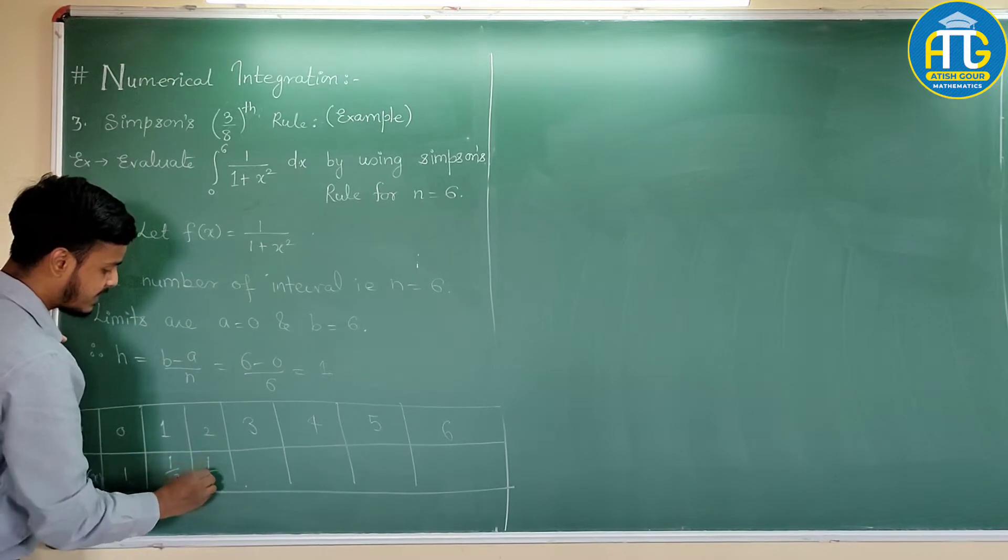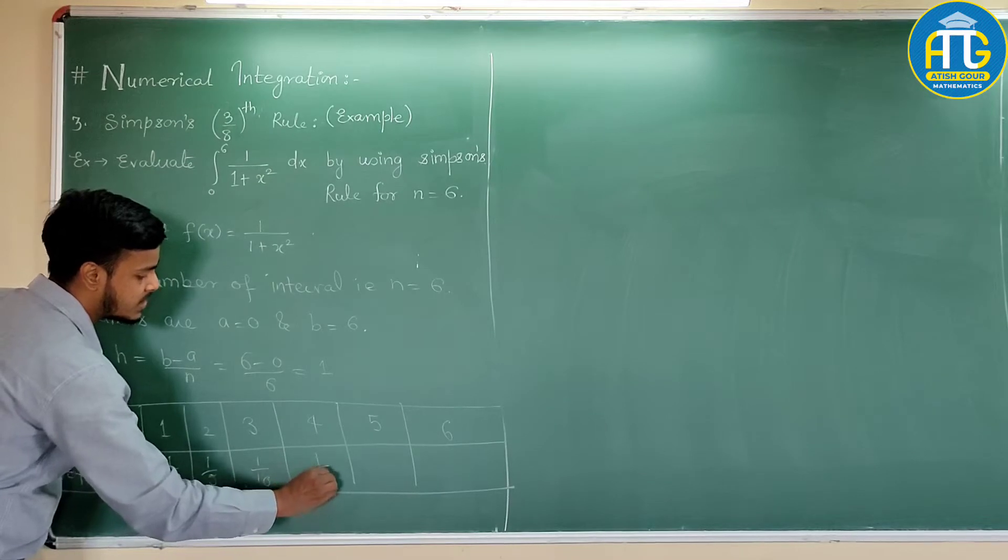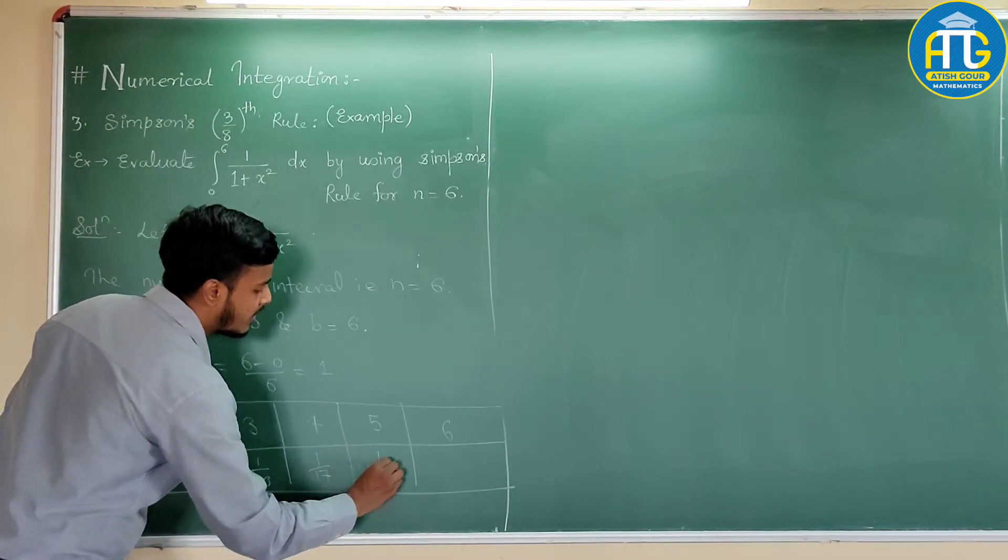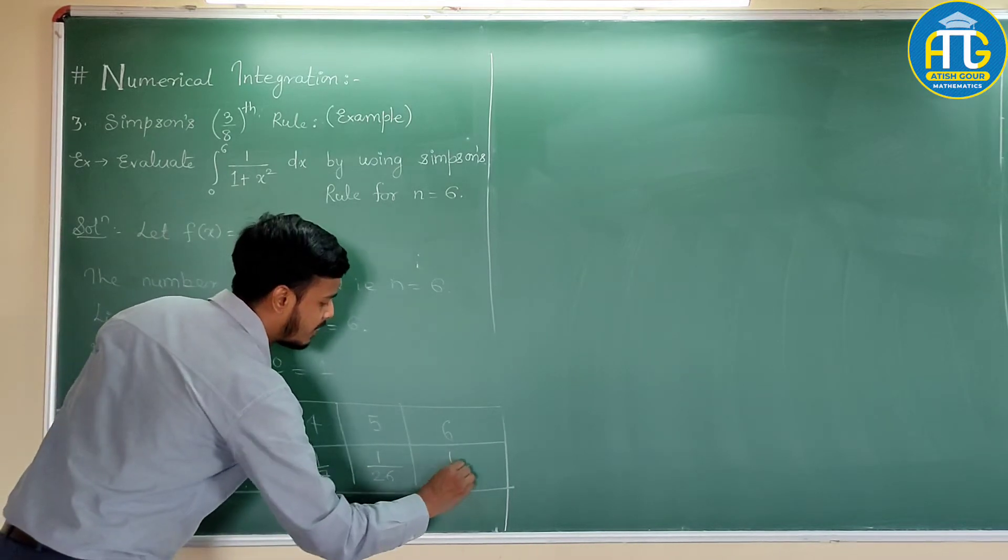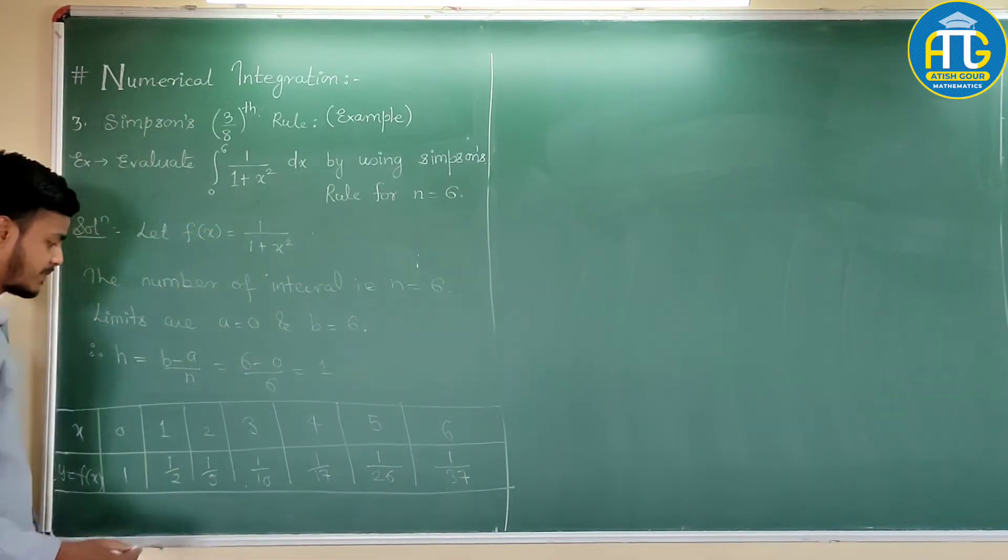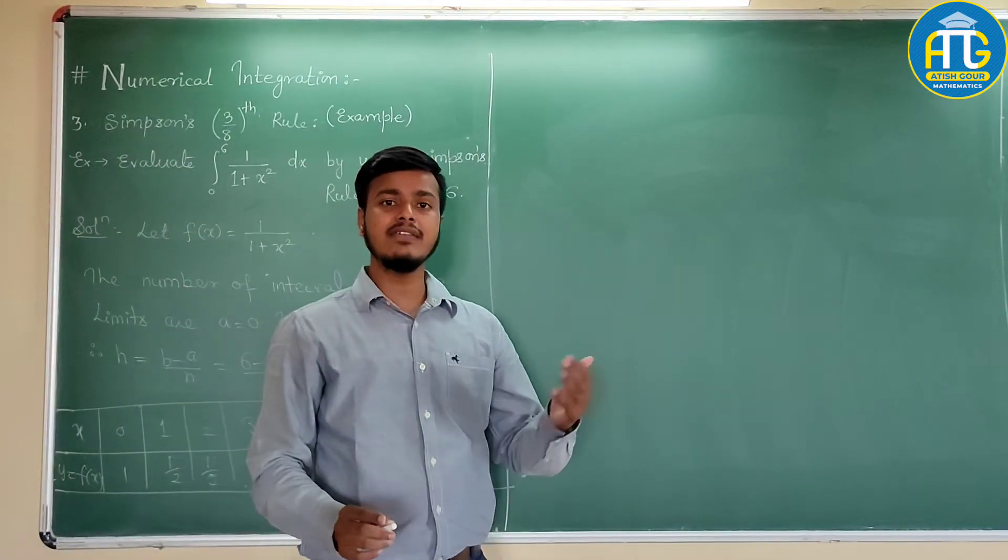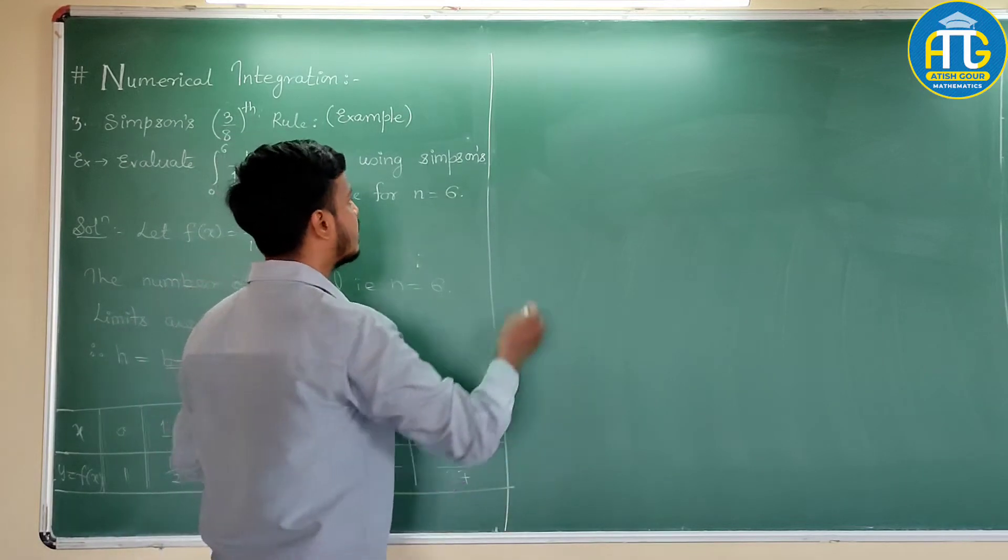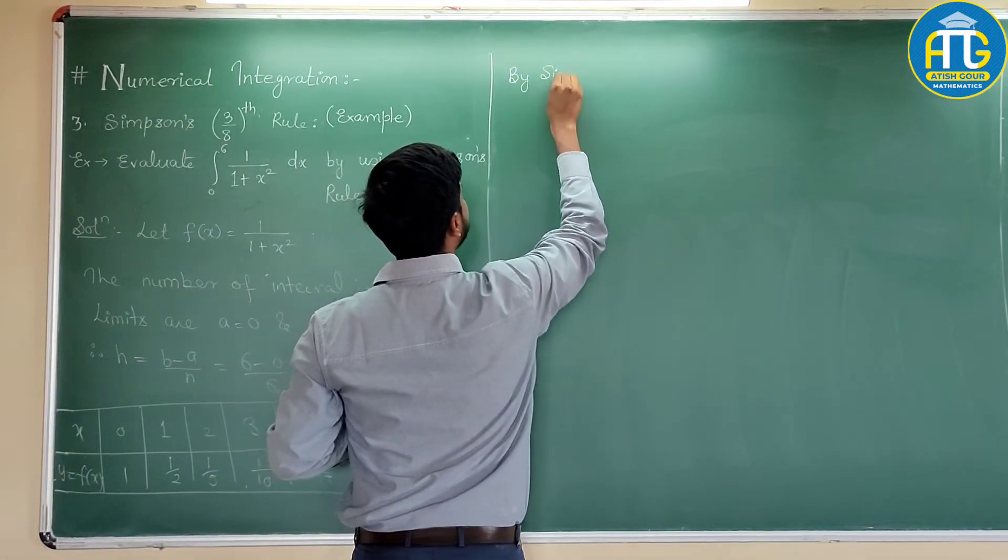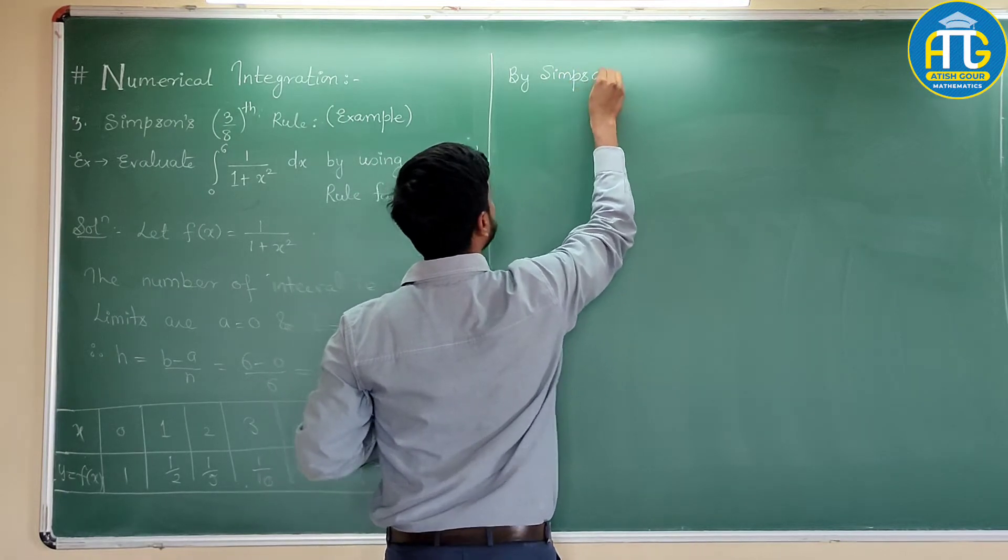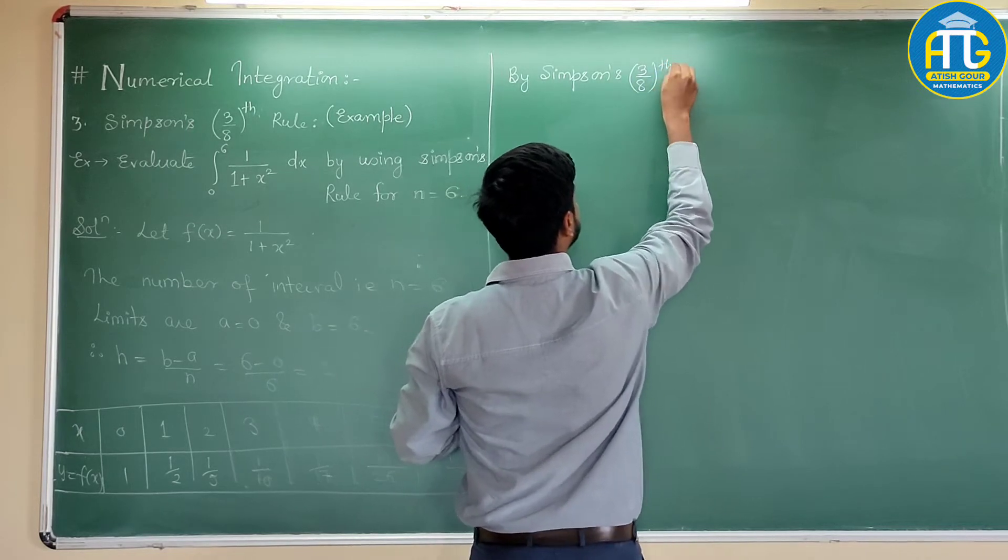So, 1 by 5 it is. Then this is 1 by 10. This is 1 by 16 plus 1, 17. This is 1 upon 1 plus 25, 26. This is 1 upon 1 plus 36, 37. So, I will make use of Simpson's 3/8 rule first. And then I will solve by Simpson's one third rule as well. So, I will write here, by Simpson's 3/8 rule.